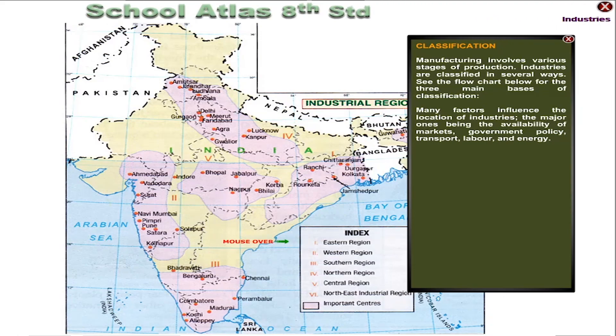Many factors influence the location of industries, the major ones being the availability of markets, government policy, transport, labour and energy.